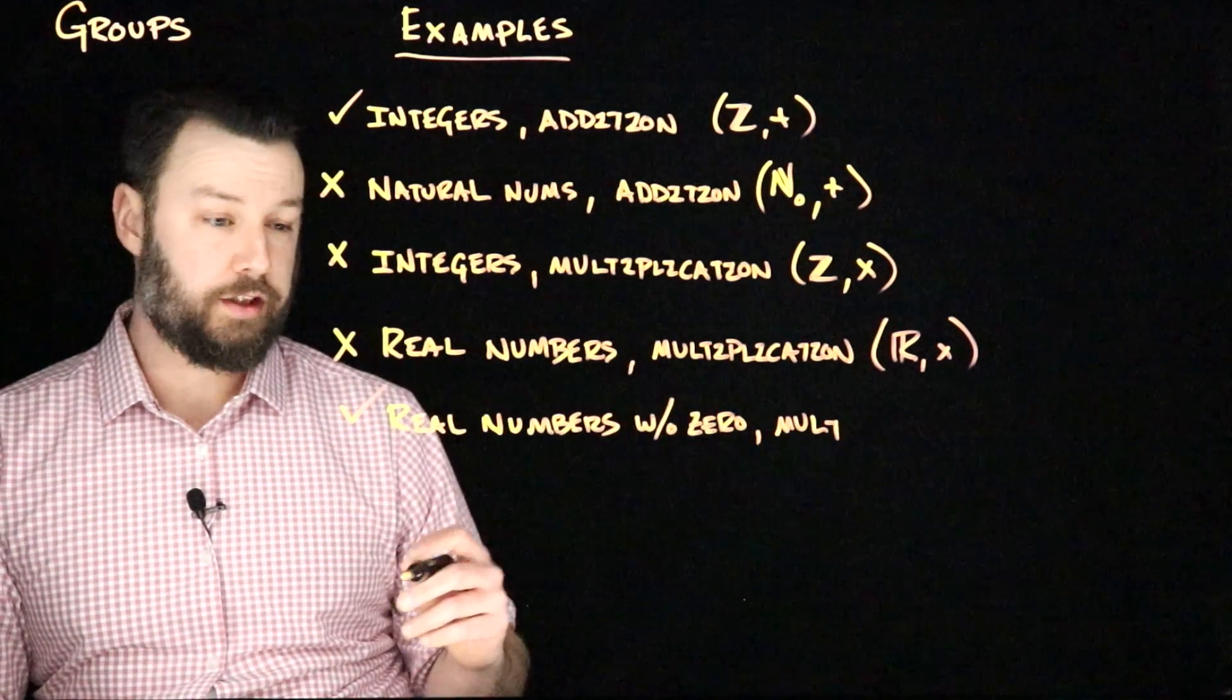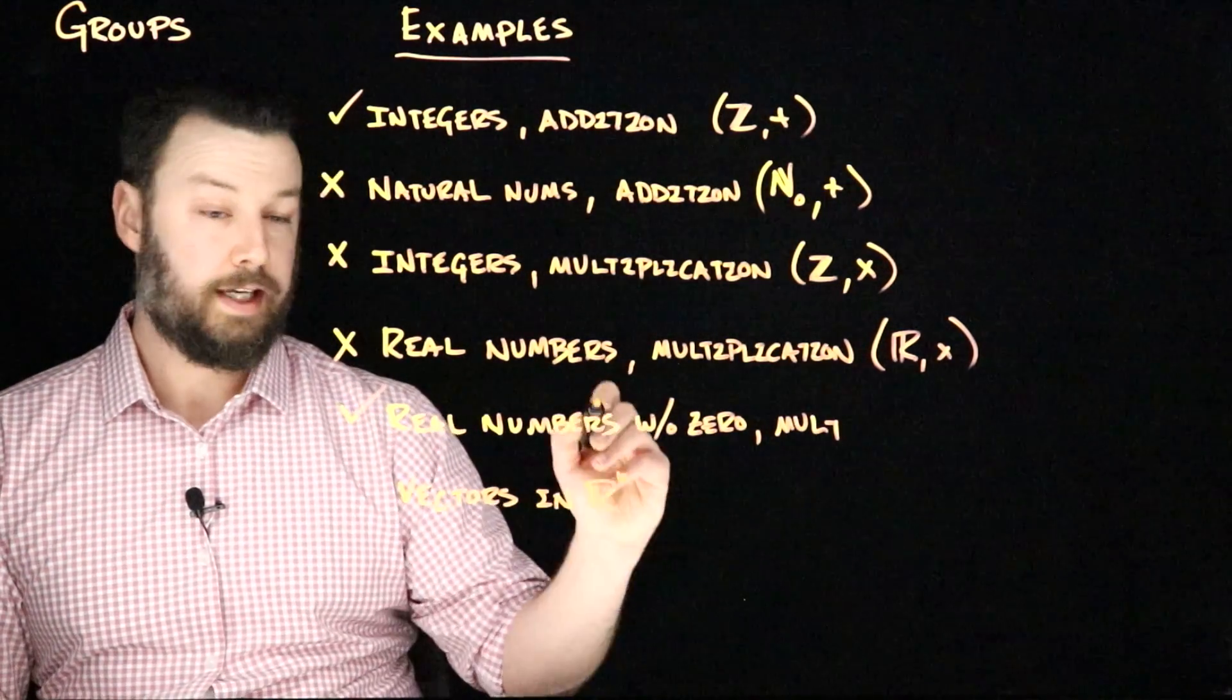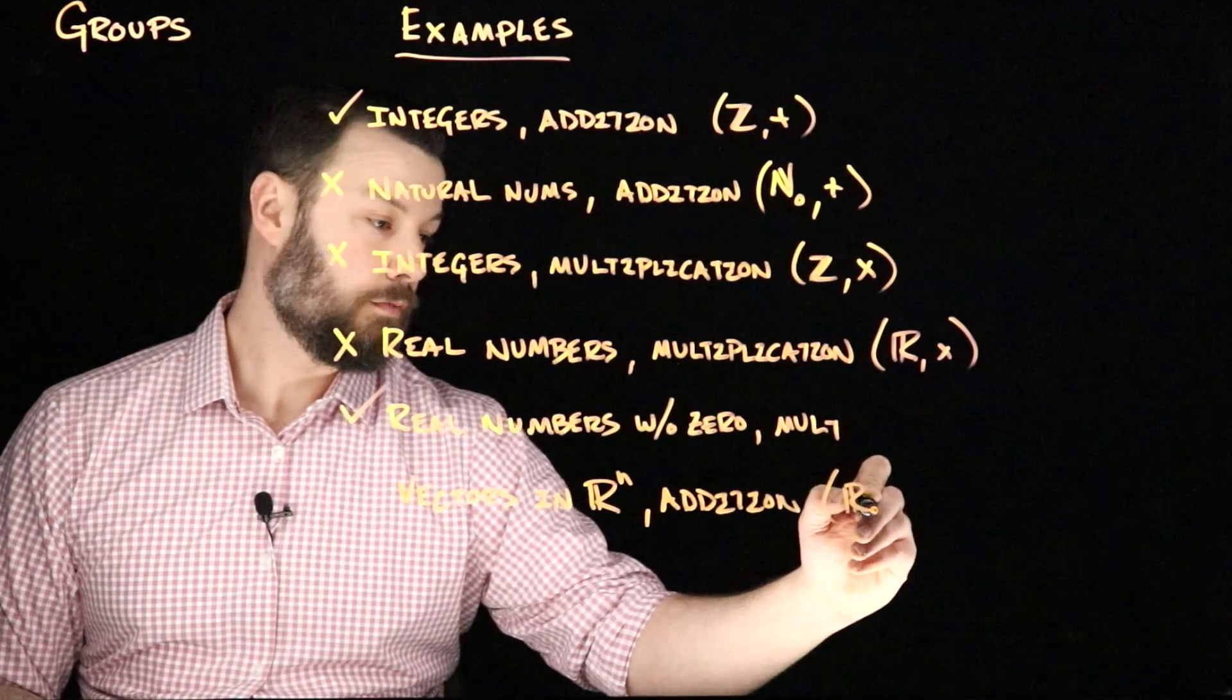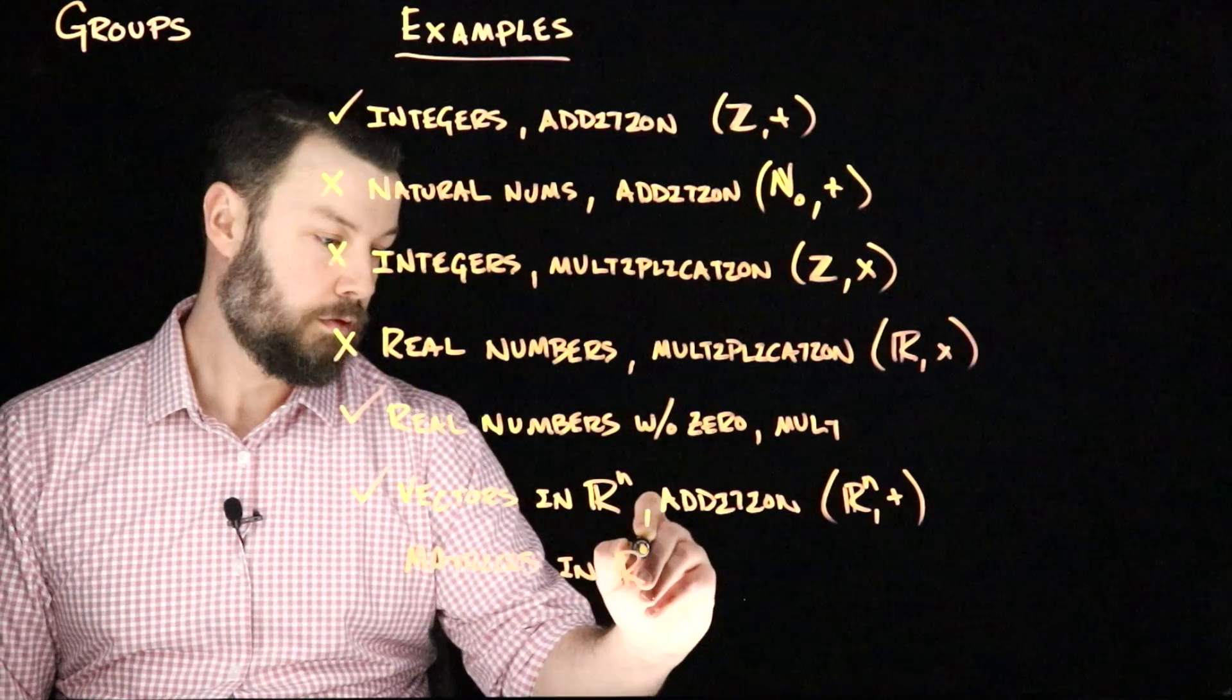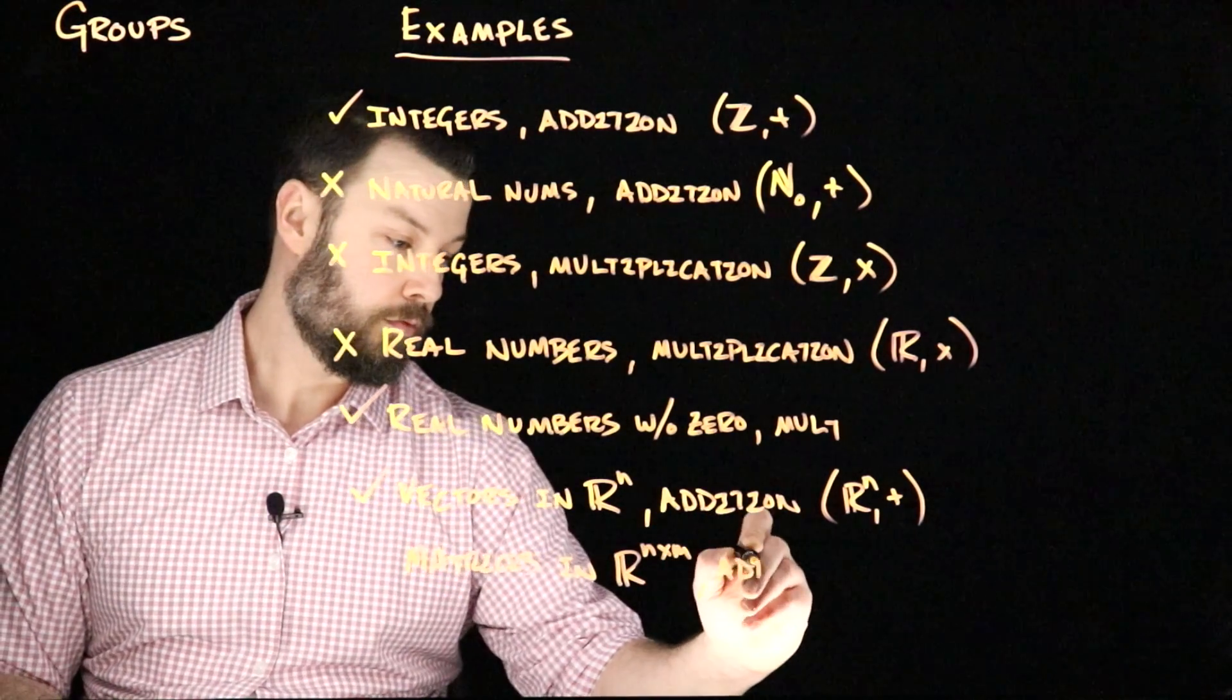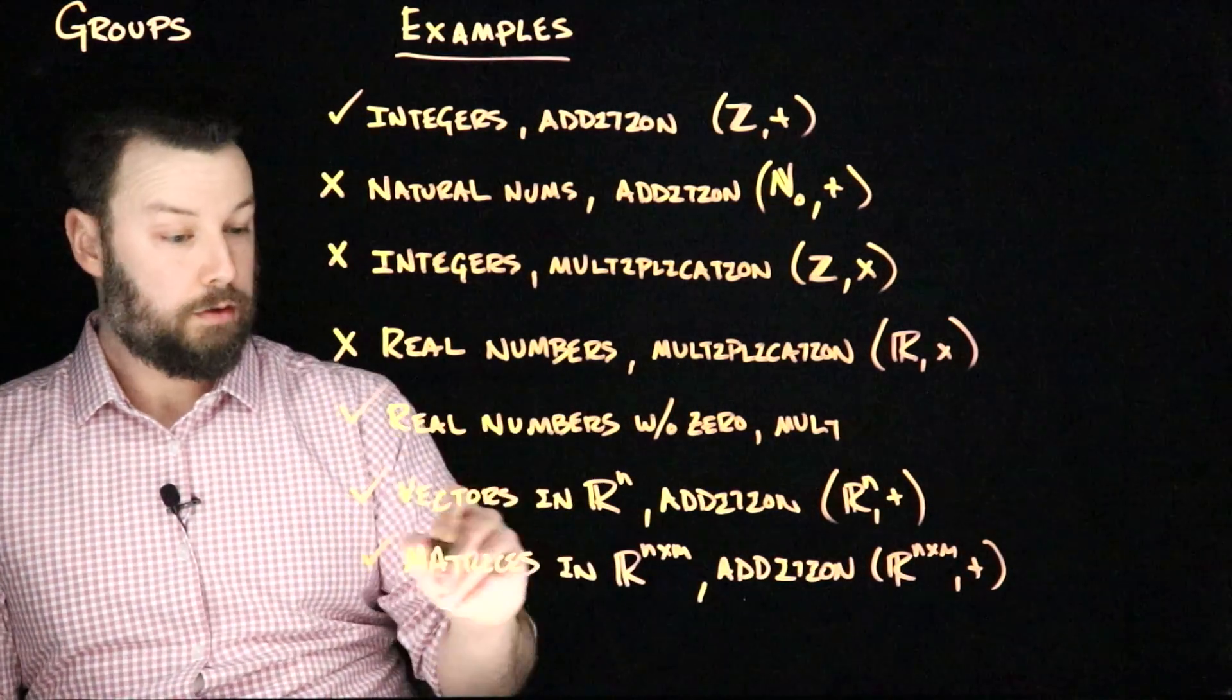Other things that of course we're going to care about here are vectors in R^n and addition. So that is a group. And then matrices of a particular shape, say n times n, and addition, are also a group. Notably, these are also abelian groups.